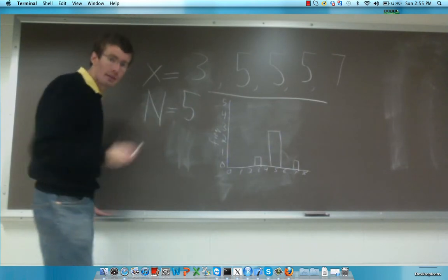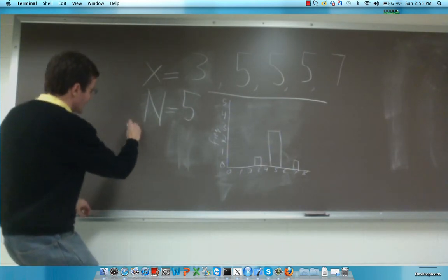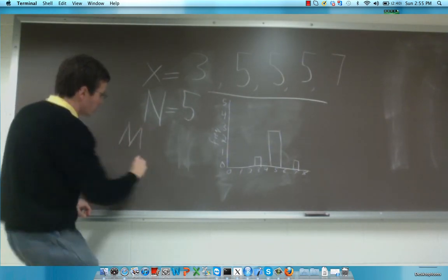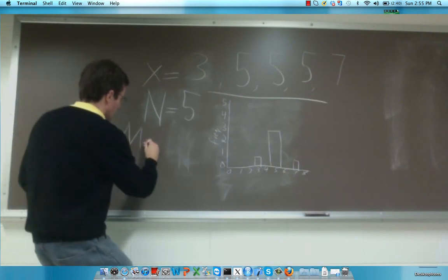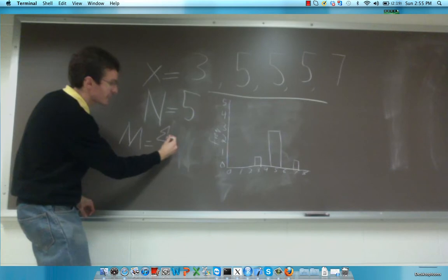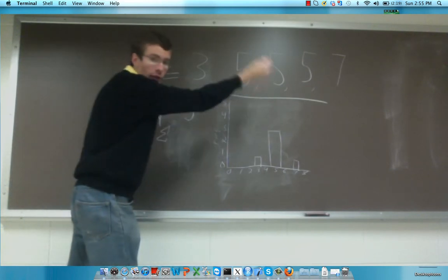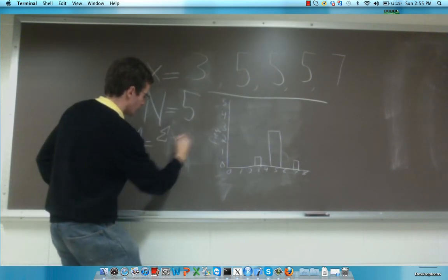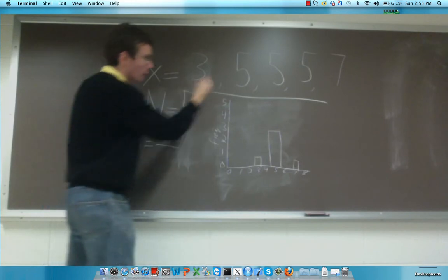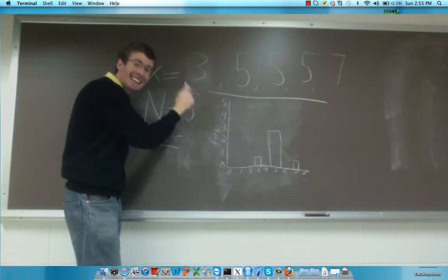To calculate the mean, we have a simple formula where we take m, which stands for the mean, and then we take the sum, represented by sigma, of x, or all of our observations, and then we divide that by the number of observations, which in this case is 5.